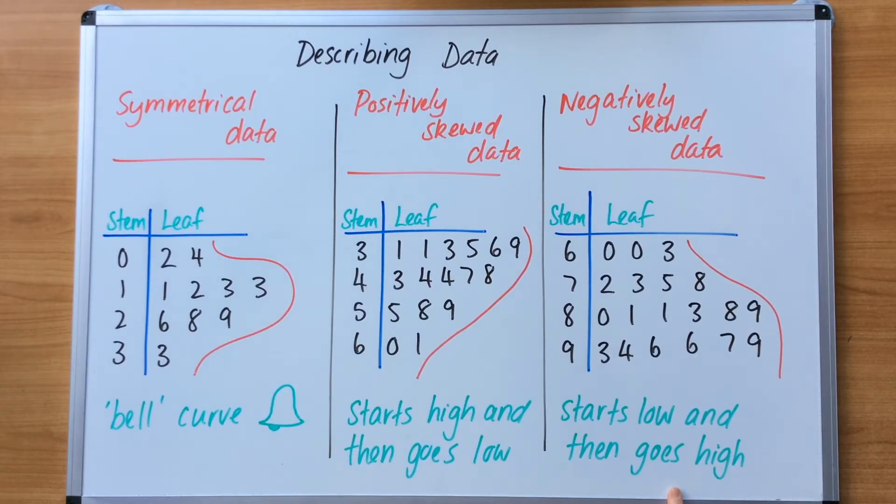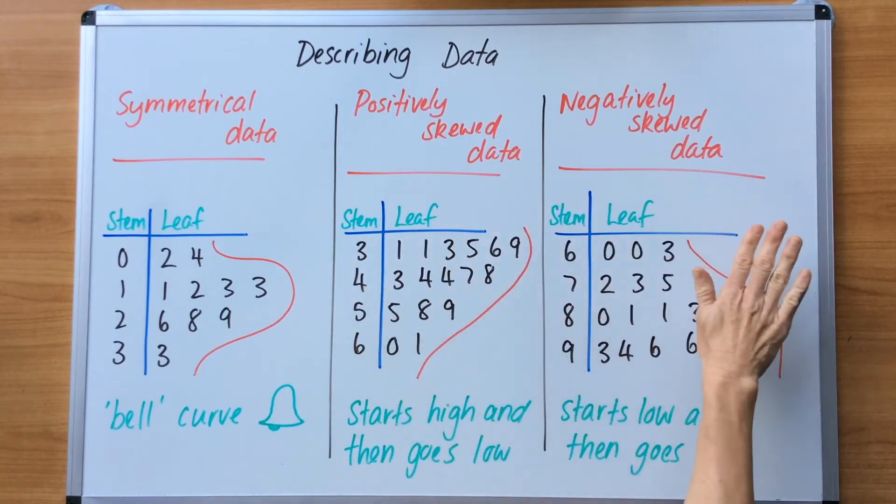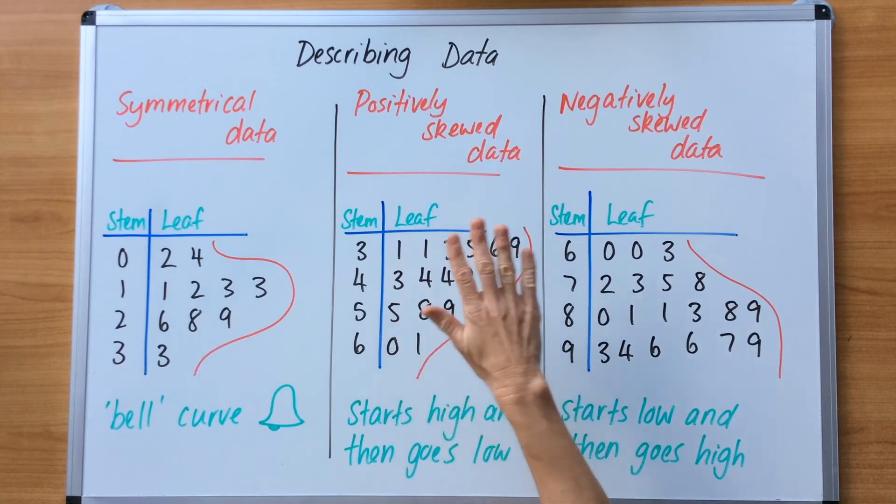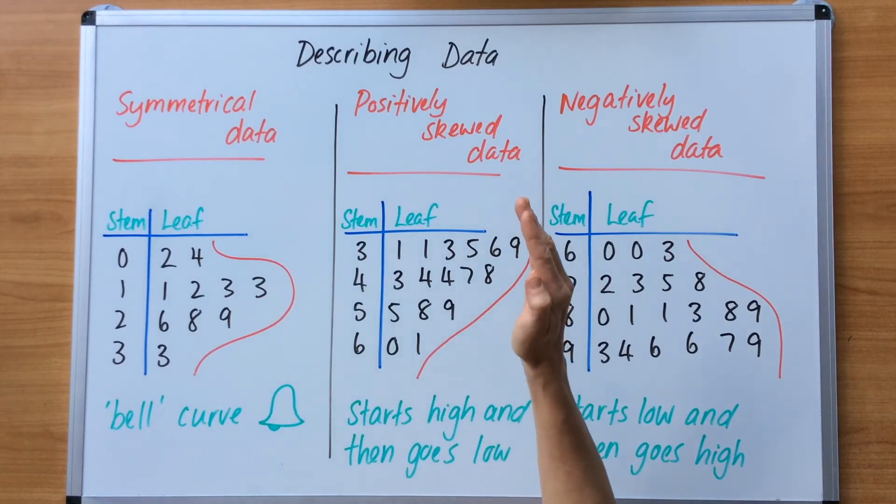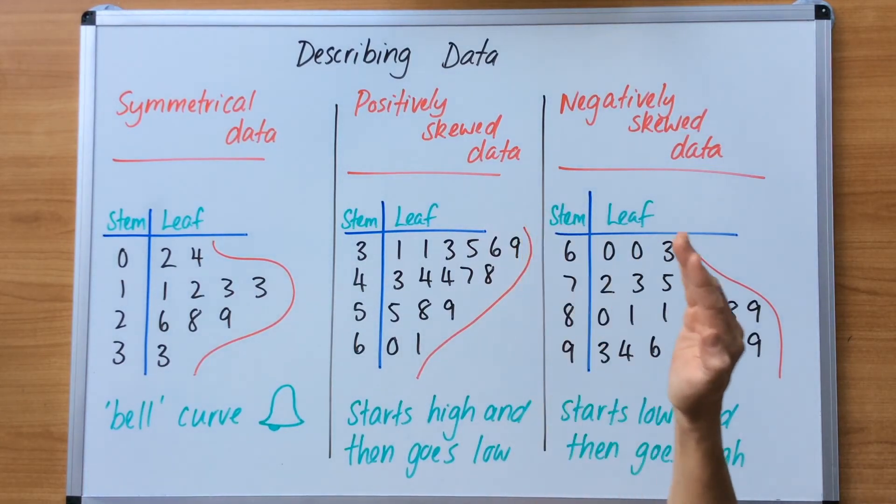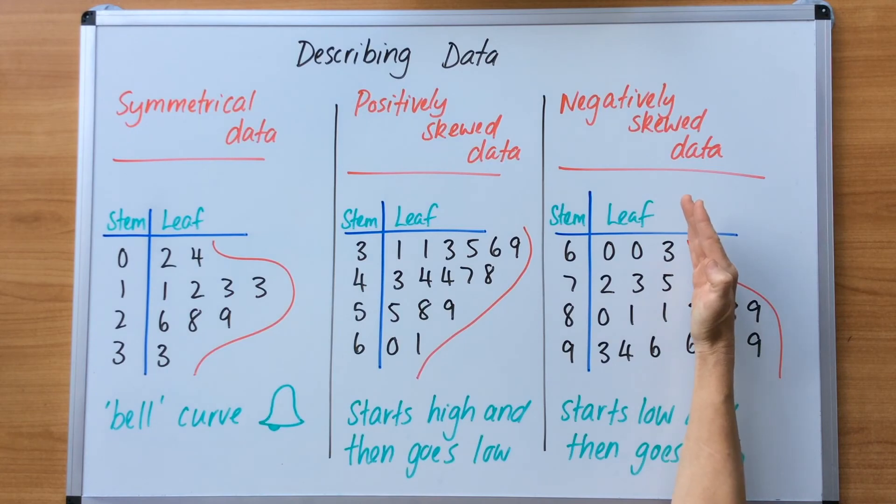As I've mentioned, this kind of data, which is split into two types—positively skewed and negatively skewed—will bunch the data to one end. Positive means starts off high to begin with, and negative means starts off low to begin with.